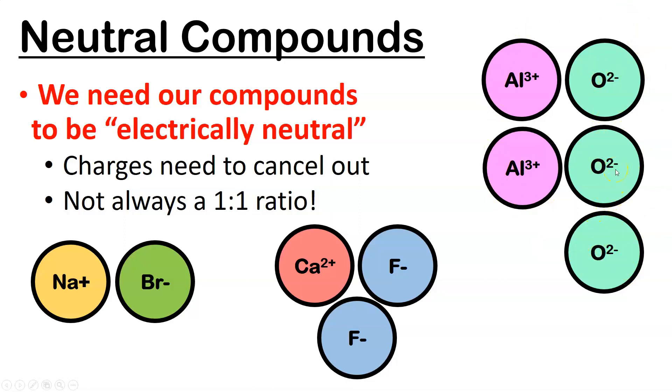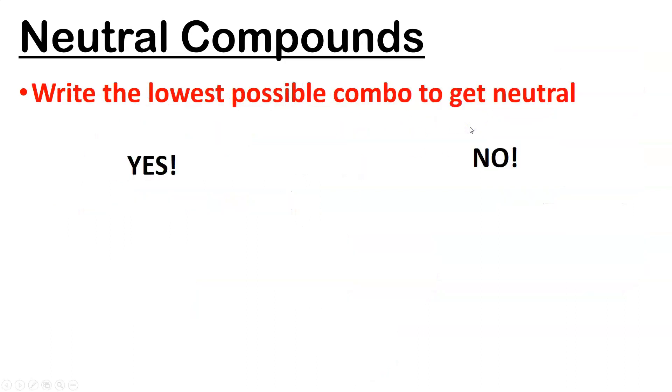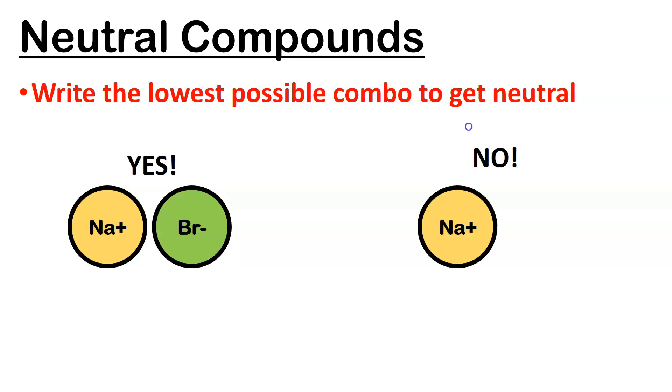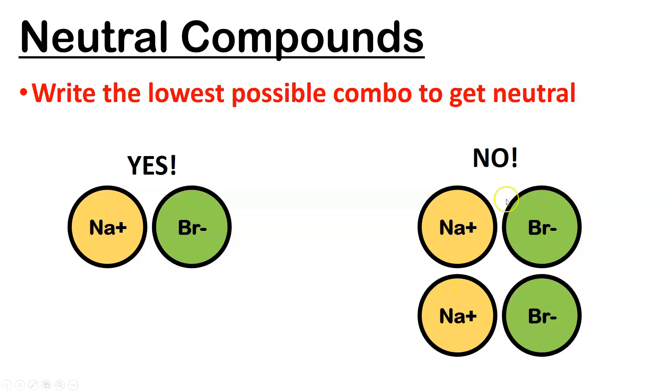I really don't want to have to sit there drawing little circles on my paper. So we will have a shortcut so we don't have to do that. One thing you got to be careful of is that we're always using the smallest combo. If we have two sodiums and two bromines, yes, this would be neutral, but this is not the smallest ratio we could have. Two to two is going to simplify down to one to one ratio. So make sure that you're not making your compounds bigger than they need to be.